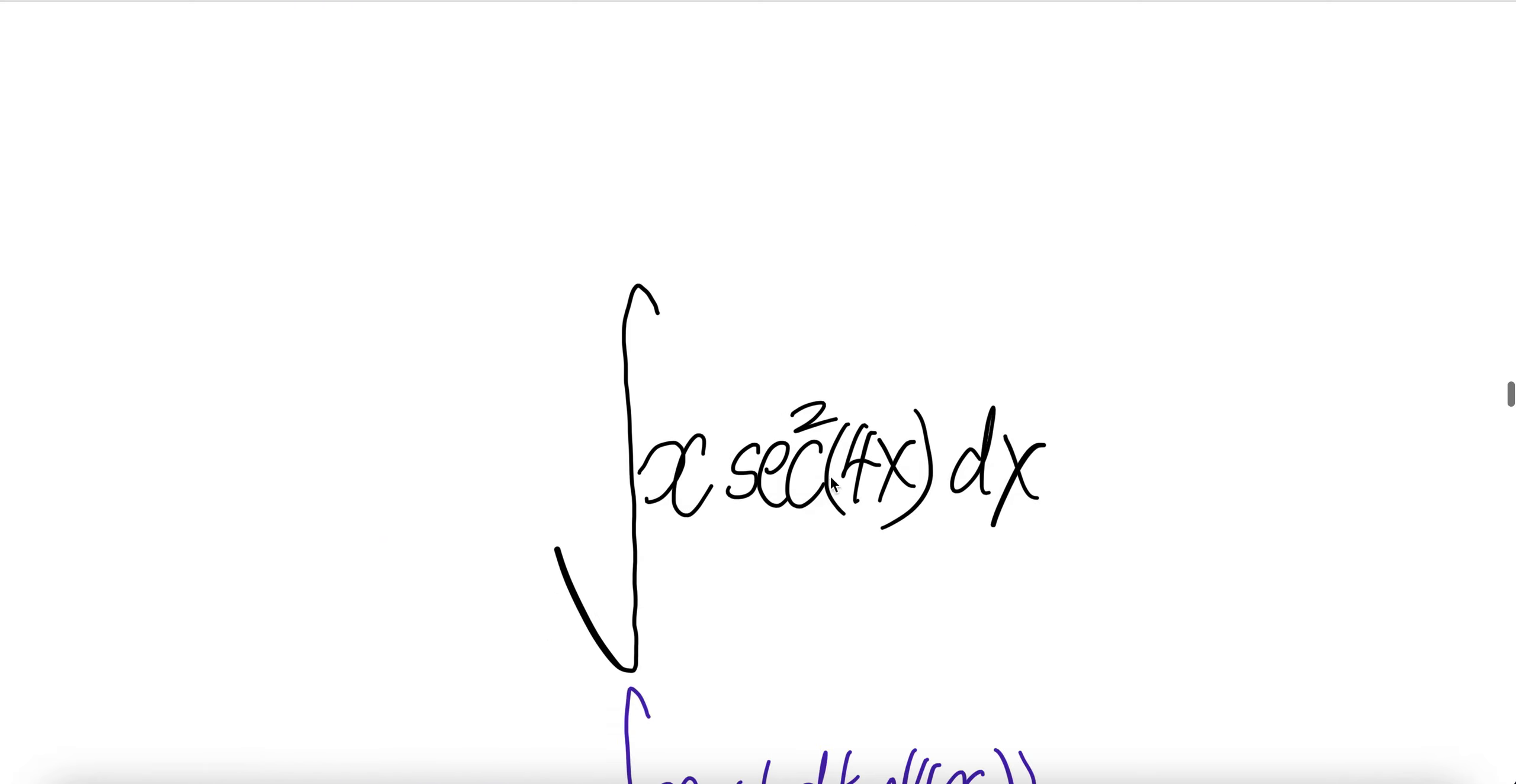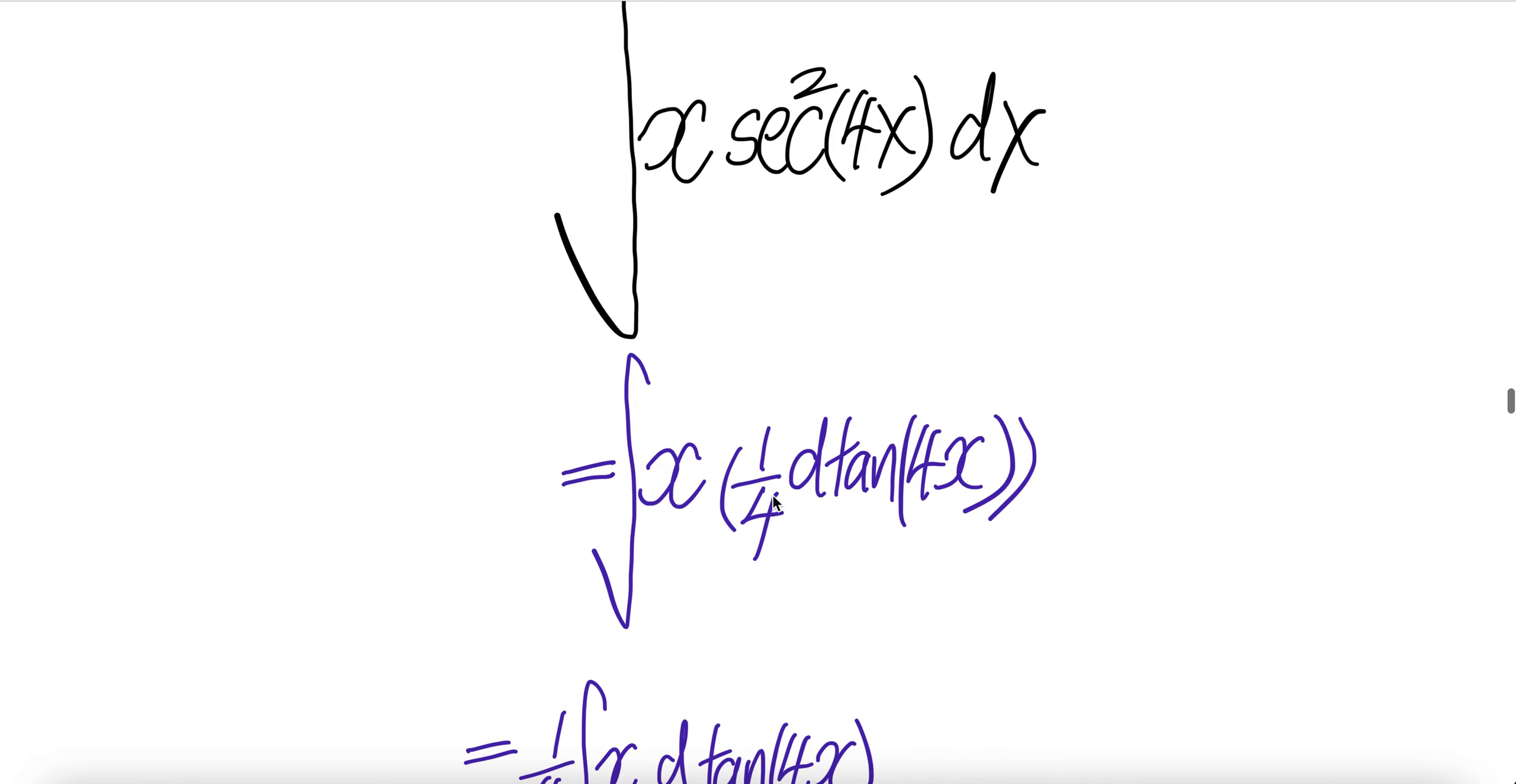Integral of x times sec squared 4x dx. The derivative of tangent 4x is sec squared 4x times the derivative of 4x, which is 4. The 4s cancel, giving you sec squared 4x dx.